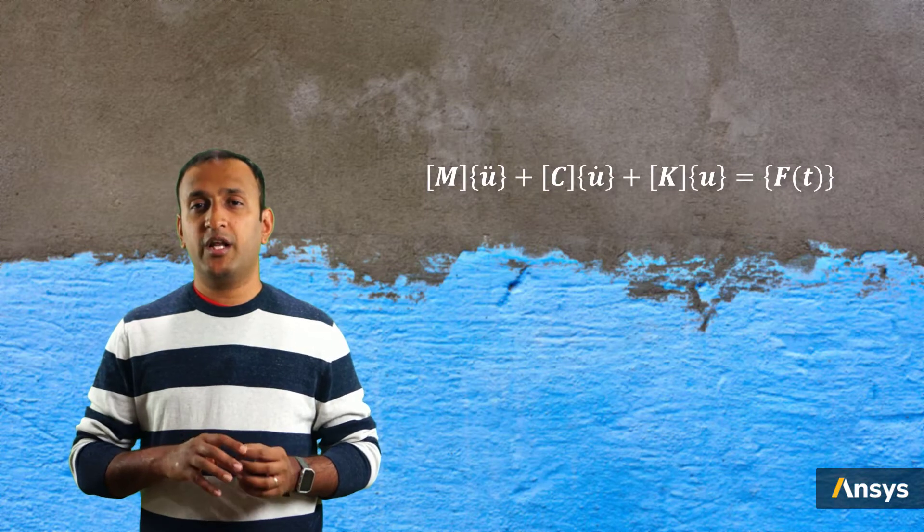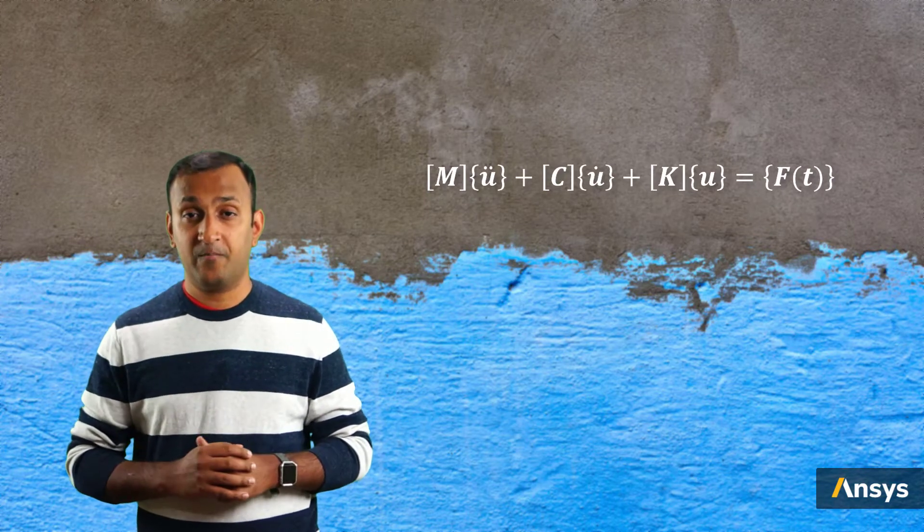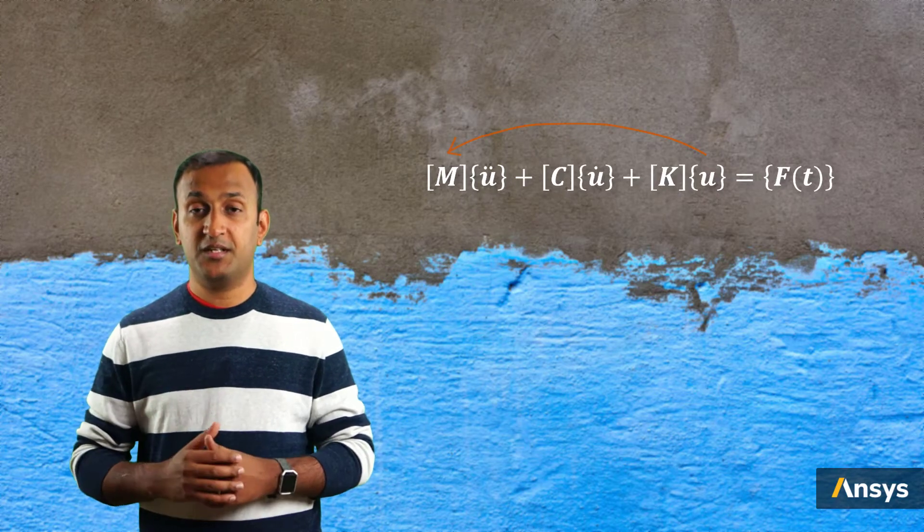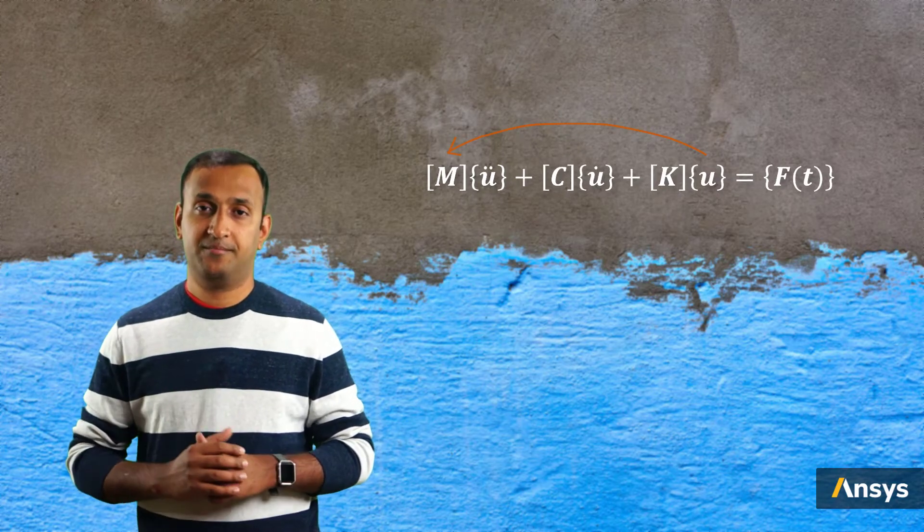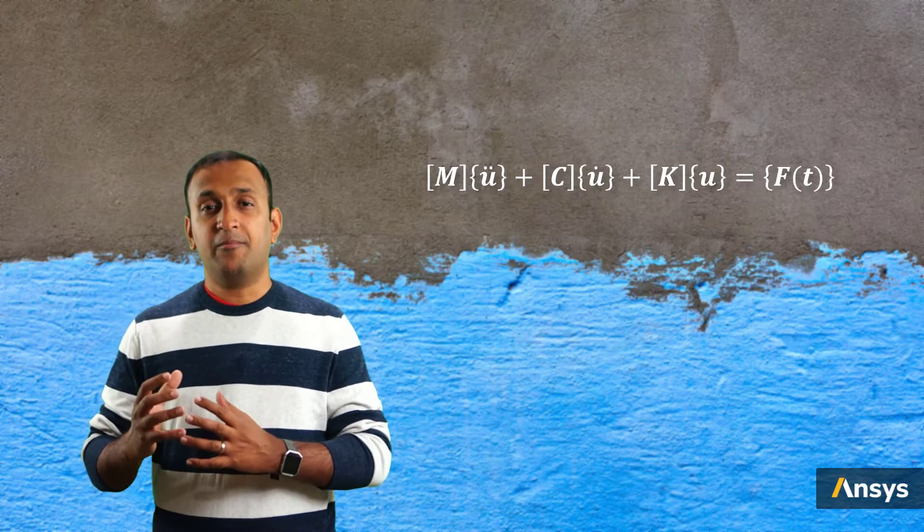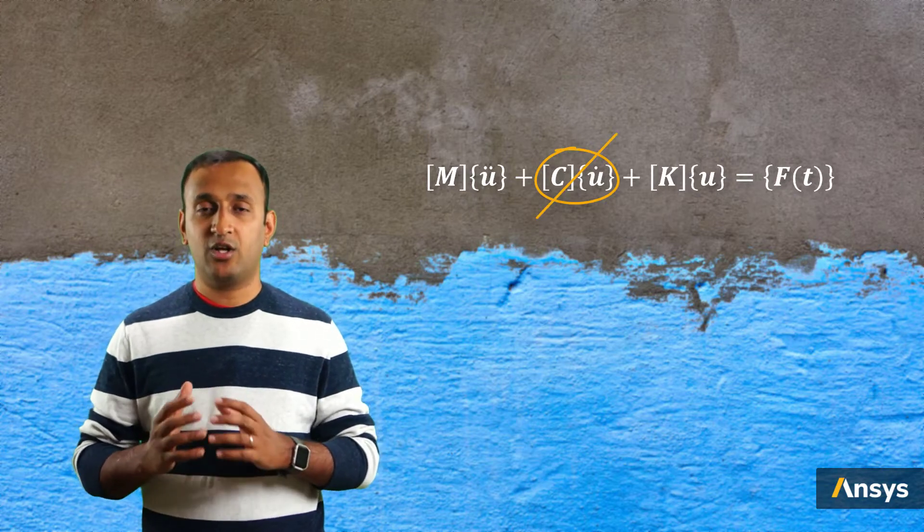Unlike dynamic instabilities, buckling is usually not due to the inertial effects. In fact, it is due to a sudden change of potential energy of the system into kinetic energy. So, having some form of dissipation mechanism may not be very helpful in resolving such instability.